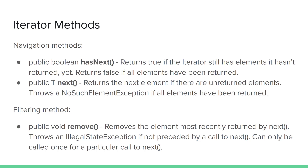The second method returns an element from the collection. next returns the next element that hasn't been returned yet and moves the iterator through the collection so that that element won't be returned again. If you try to call next when there is no next, it is expected to throw a NoSuchElementException. In combination with hasNext, you can safely call next without having to worry about throwing any NoSuchElementExceptions.